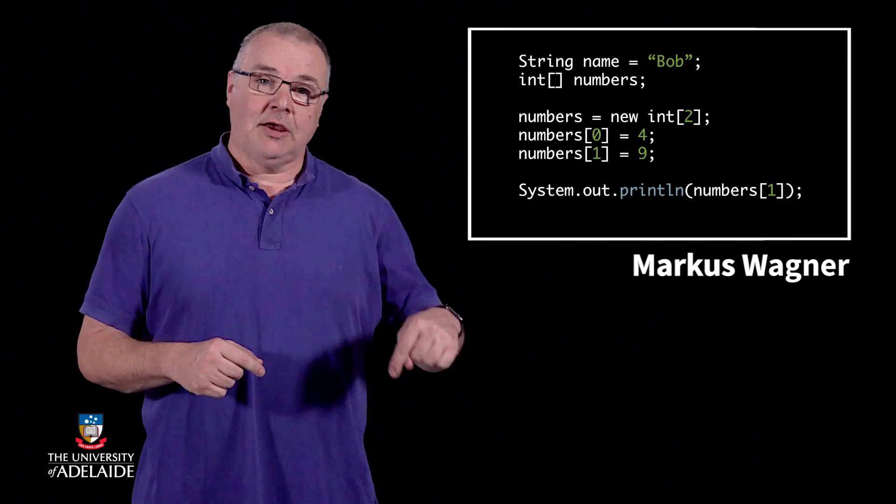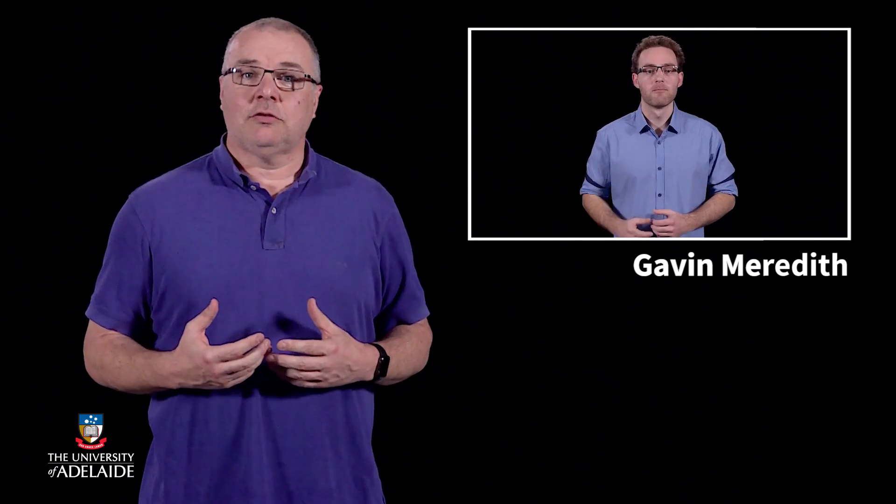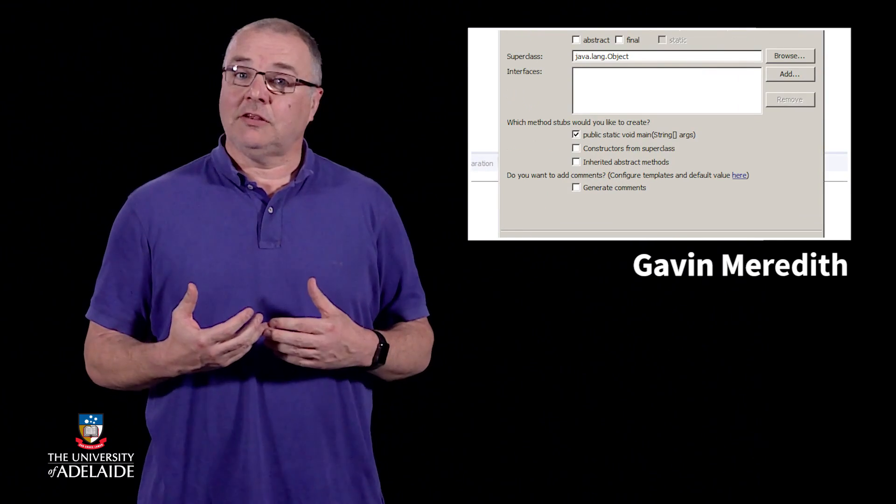The second half of the course will have a greater focus on computer science. You'll be guided through Java programming, graphs and basic probability theory by Marcus, who is senior lecturer at the School of Computer Science here at the University of Adelaide. You'll also meet Gavin, who will take you through some Java programming essentials, and Ian, who will help you to get to understand graphs and hashing.